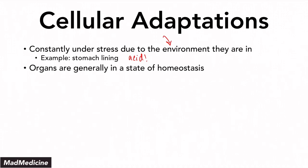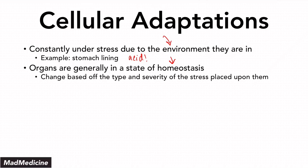Organs, however, are generally in a state of homeostasis. They're able to maintain that homeostasis by being able to adapt. After a while, after the stress exceeds their limit, they're going to have to change in order to maintain their normal functioning and stay in a relative state of homeostasis. This change of the organ is based on the type and severity of the stress placed upon it. An increase in stress after a certain point will eventually lead to the growth of an organ.